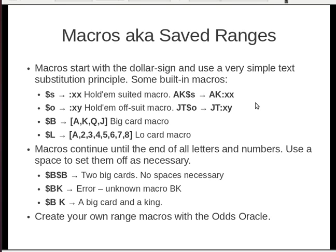There is also extra help to keep you from typing extremely long things. We have macros, also called saved ranges, which start with a dollar sign — it's basically pure text substitution. So dollar-S is colon-XX, which stands for suited in Hold'em. If you write ace-king dollar-S, it translates to ace-king colon XX. Dollar-O translates to XY for offsuit. Dollar-B is a big card and dollar-L is a low card. If you write dollar-B dollar-B, it's two big cards. Note: macros continue until the end of letters and numbers or a space, so dollar-B-K would be interpreted as a macro called BK and give an error.